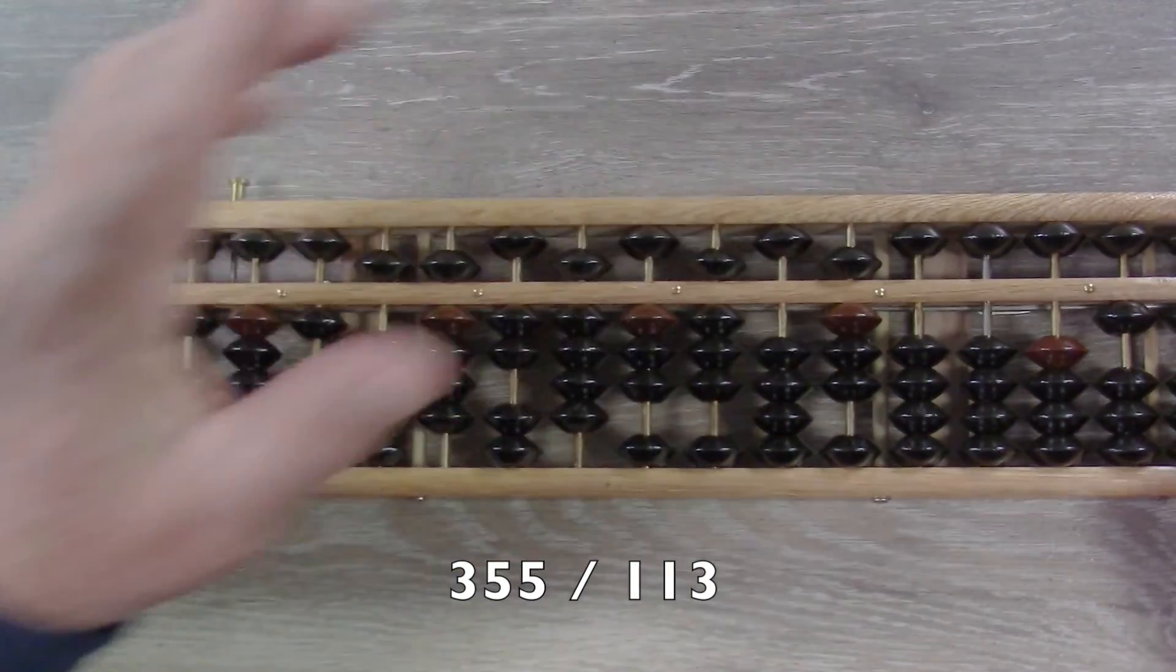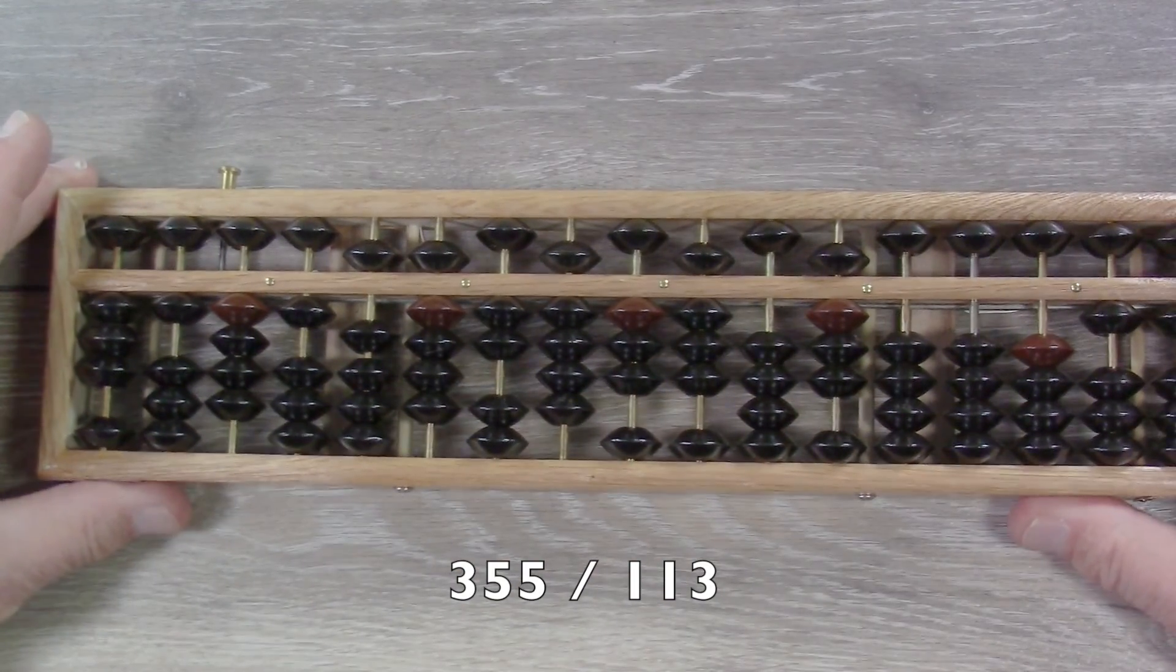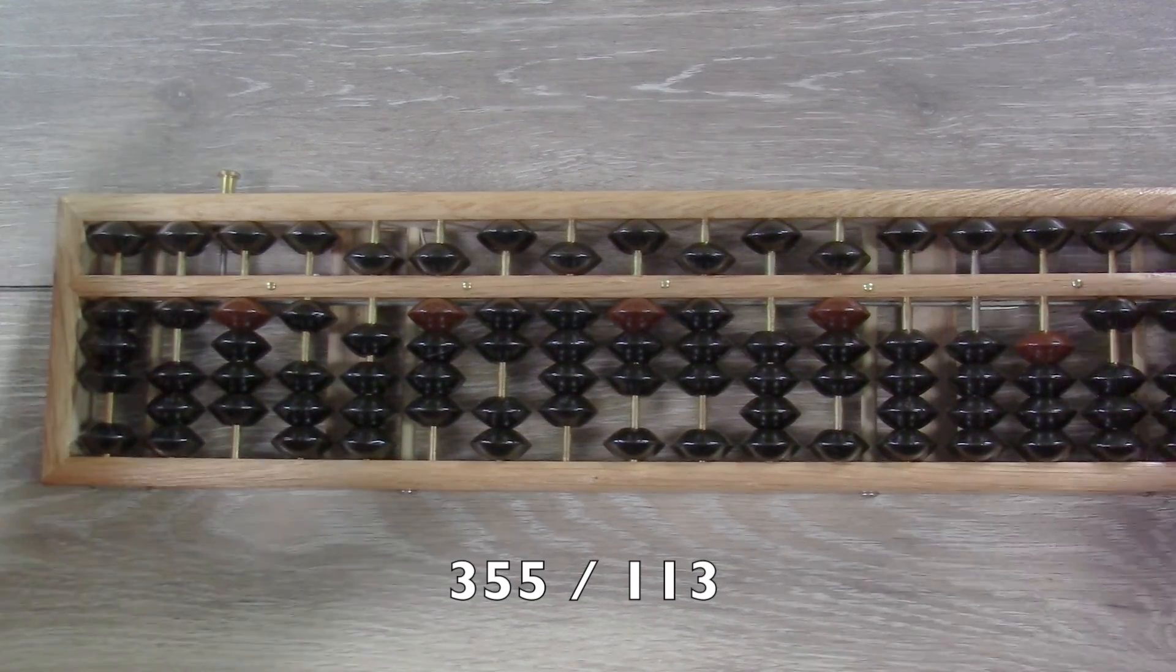So, that's 11 decimal places. So, hey, not too bad. For an abacus, this is probably enough accuracy for engineering or science use.